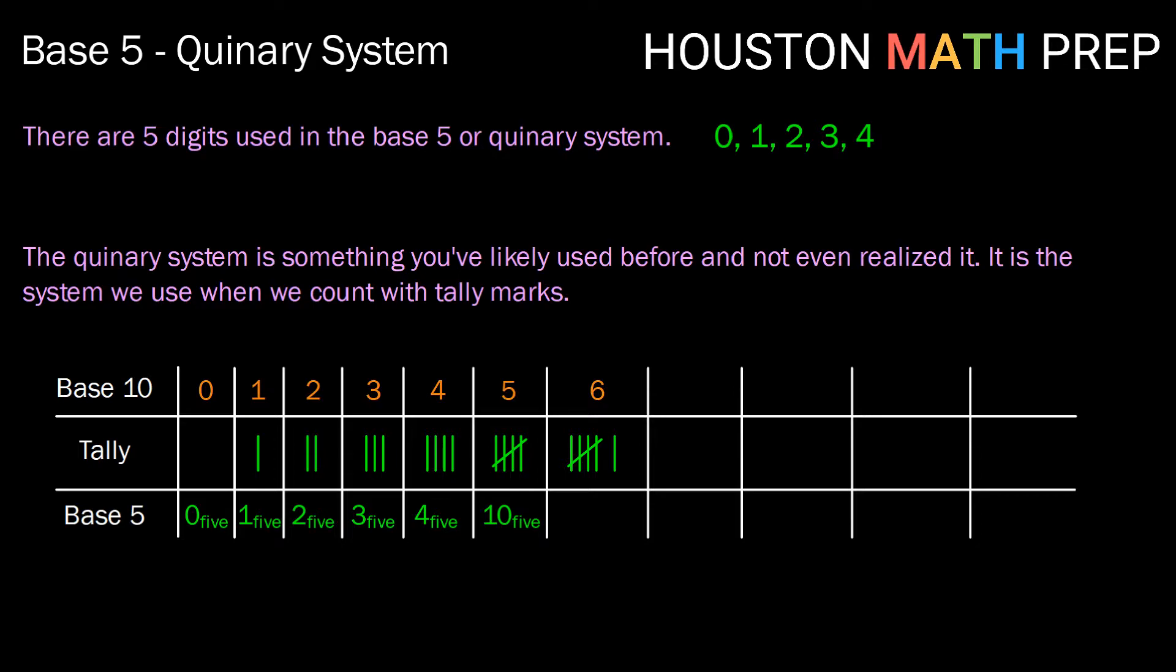So thinking along those lines, the number 6 in base 10, if we think about that in tallies, is 1 group of 5 and 1 group of 1. So that would be 11 base 5. The number 7 in base 10 has 1 group of 5 and 2 groups of 1. So it would be the number 12 base 5. 8, 9, and in fact 10 follow that same pattern. But let's think about 10. 10, we now have 2 groups of 5 and 0 groups of 1. So we would actually get 20 base 5.